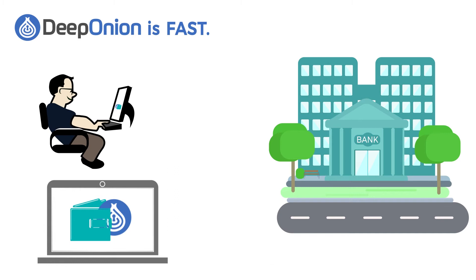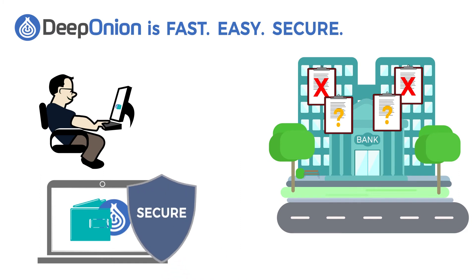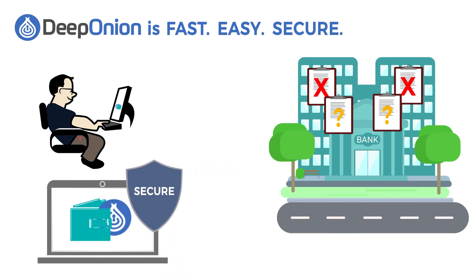Deep Onion is easy. With Deep Onion, you don't have to fill out forms like you do with a bank — all information is stored on the blockchain. Deep Onion is also secure: only you have the key to unlock the funds in your wallet.